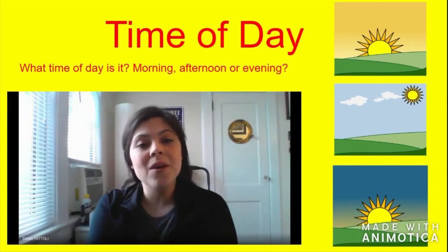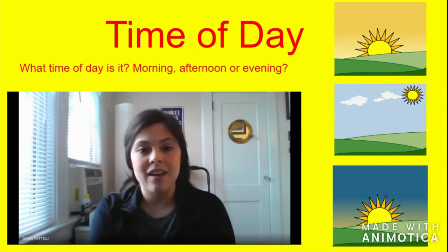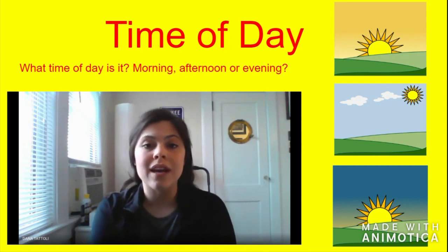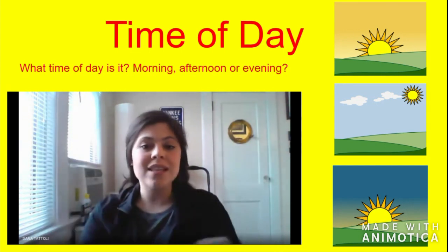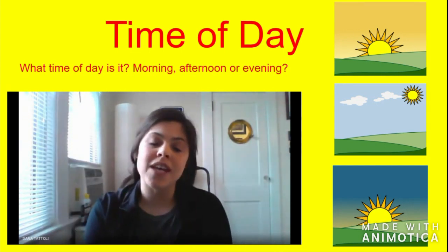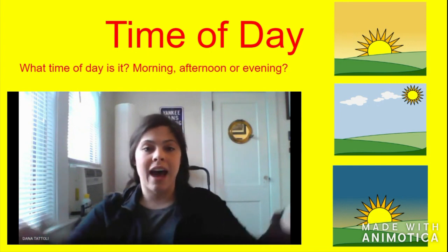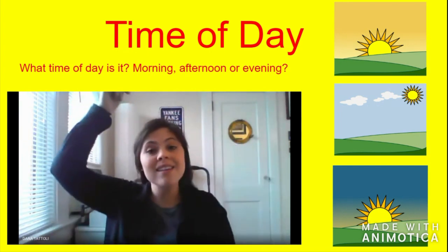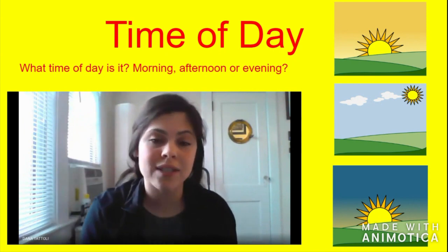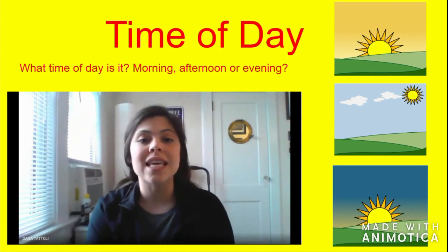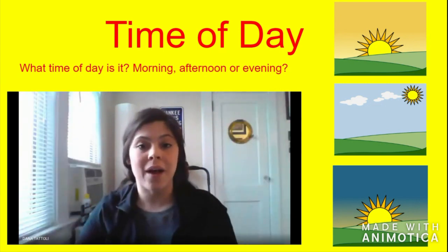We now need to go over our time of day. There are three times of day. The first one is the morning — this is when the sun is coming up, up, up. The second time of day is the afternoon — this is when the sun is right above our heads, high in the sky, even if it's hiding behind the clouds.